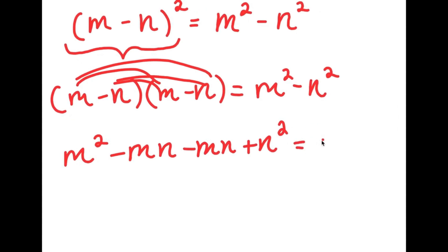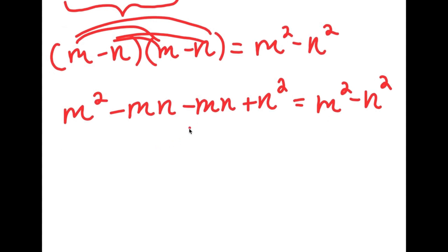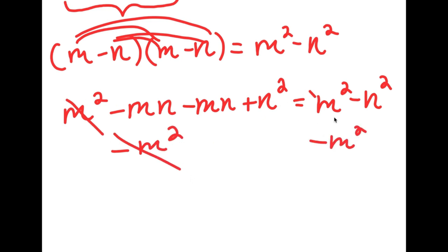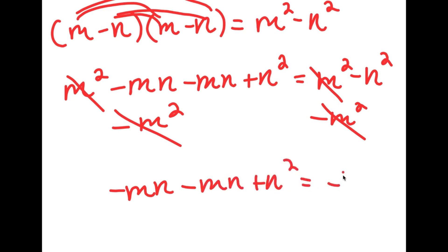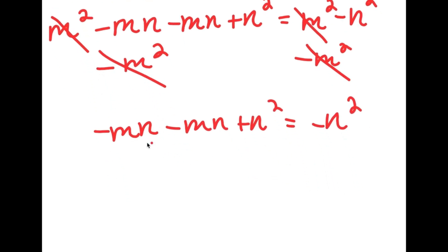So I have this is equal to m squared minus n squared. Now I can first start by subtracting m squared on both sides, so these two m squareds cancel out. Now I'll be left with negative mn minus mn plus n squared is equal to negative n squared. Negative mn minus mn is equal to negative 2mn.